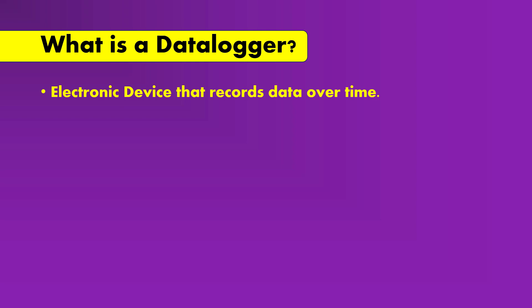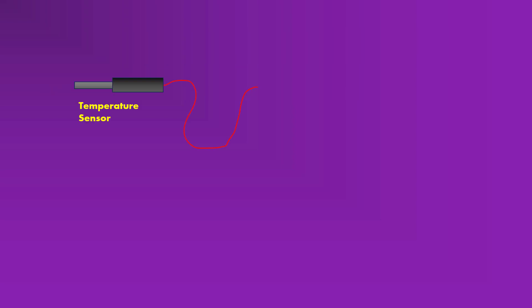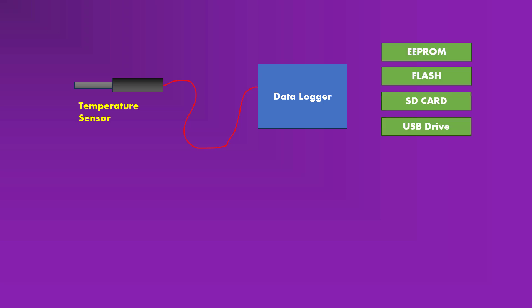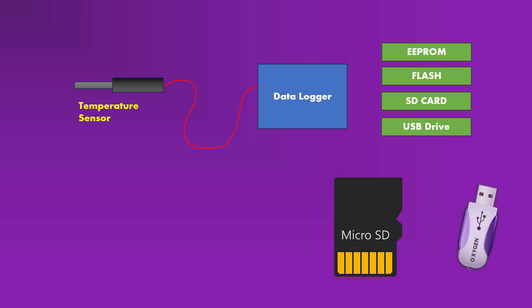What do we actually mean by recording data over time? Here, data is any physical parameter that can be measured electronically, and after the data is converted to digital form, it is logged to some kind of non-volatile memory like EEPROM, flash, SD card, or a USB device.